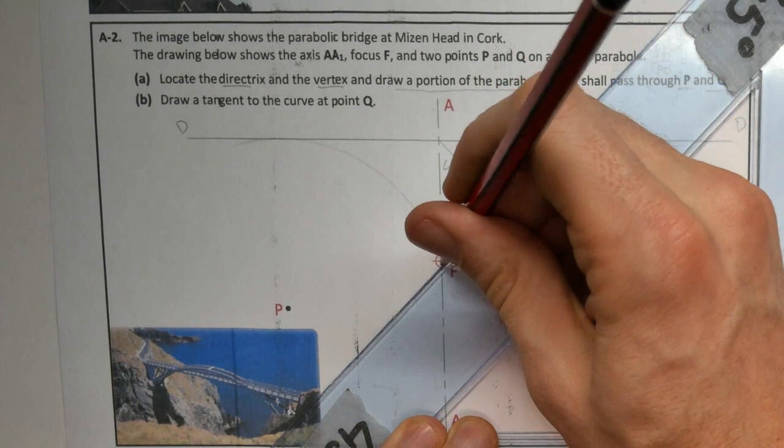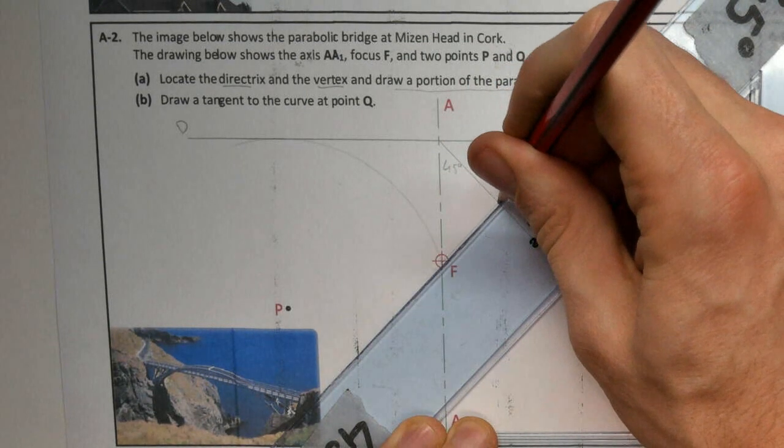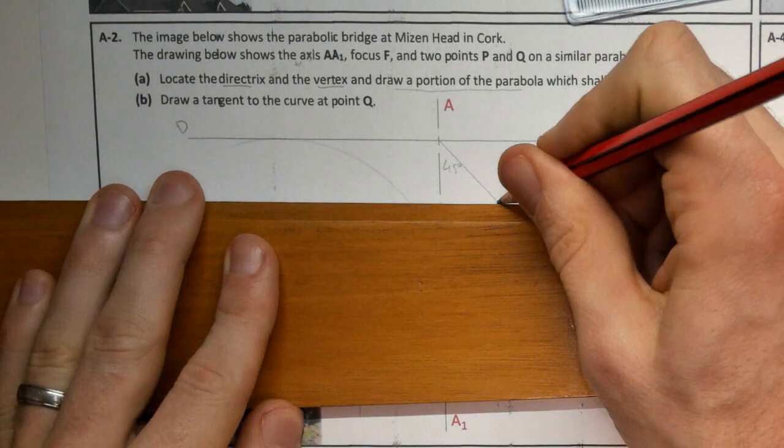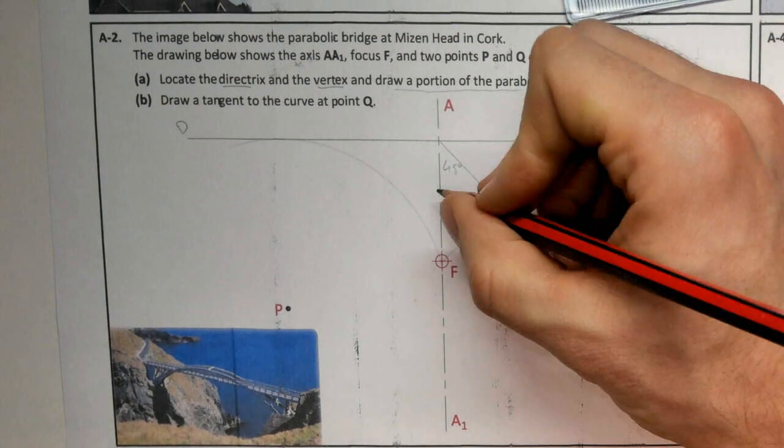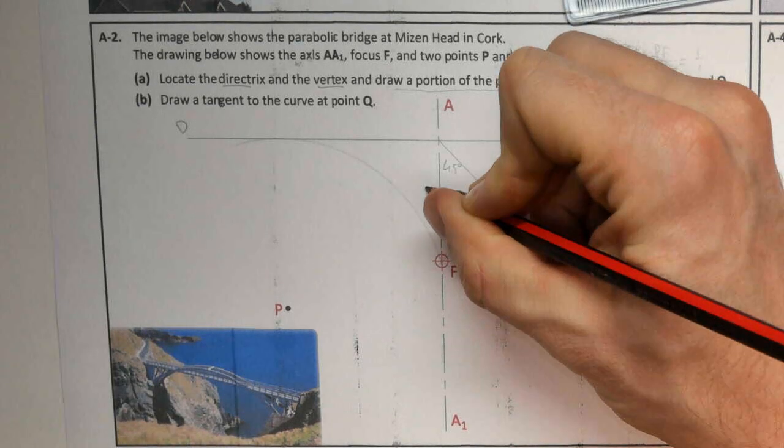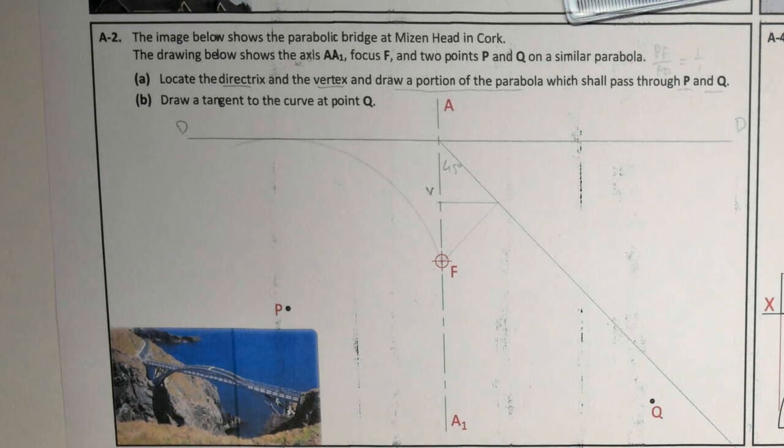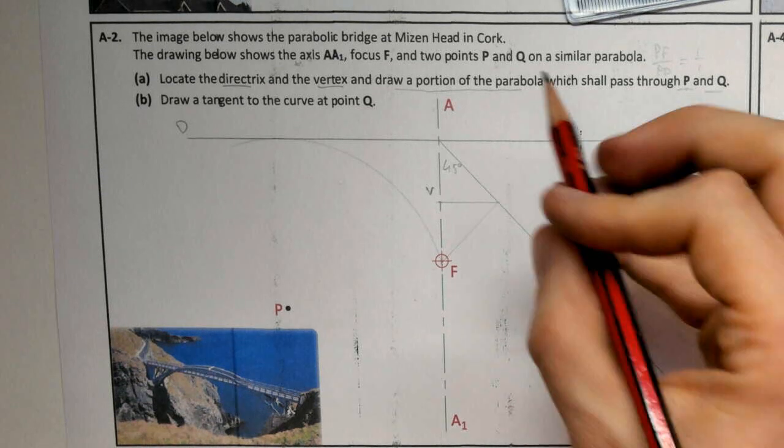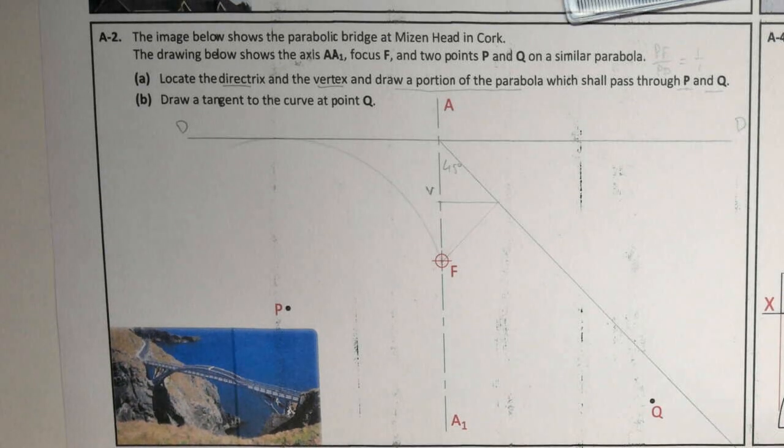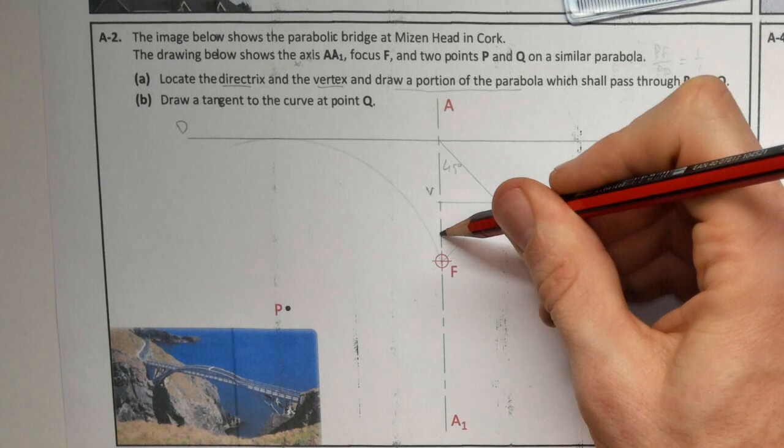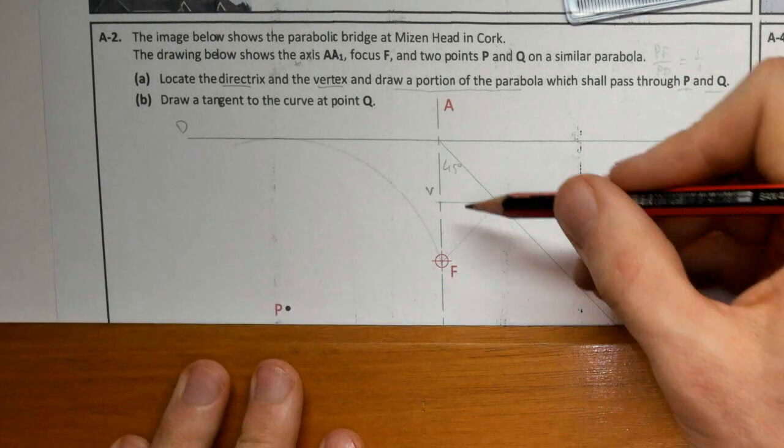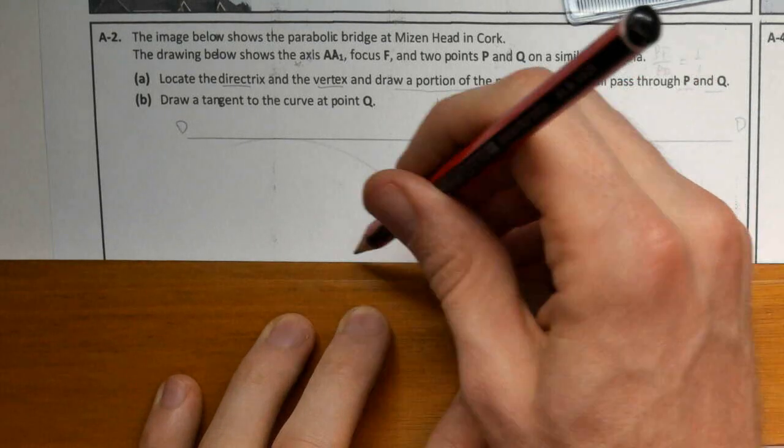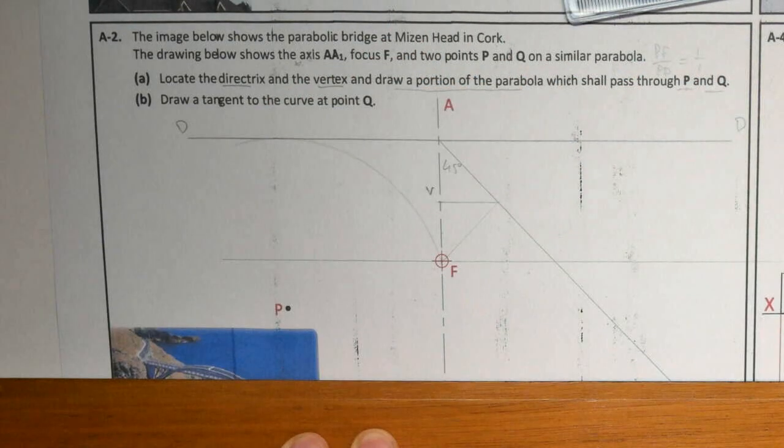To find our vertex, we know if we go 45 degrees onto that line and drop it down or across to our axis, that will find our vertex. So, two minutes there, finding the vertex. Now, we want to find the portion of the curve. We always do a point inside our V and F. But before that, I'm just going to draw my latus rectum.